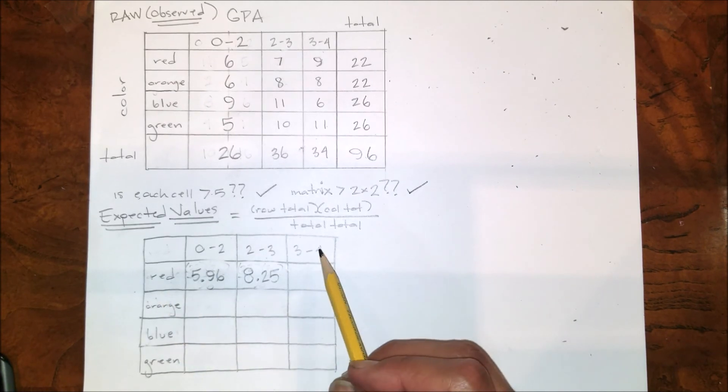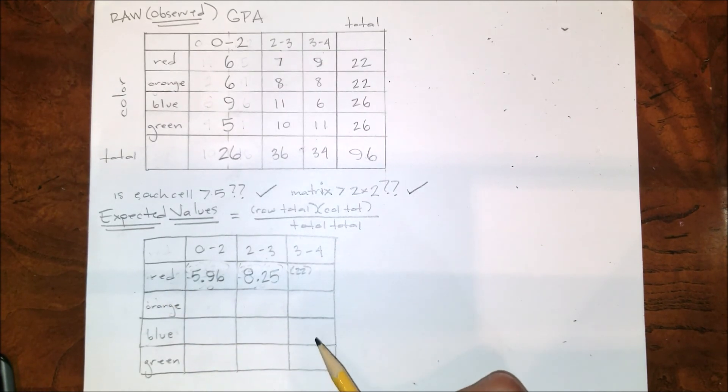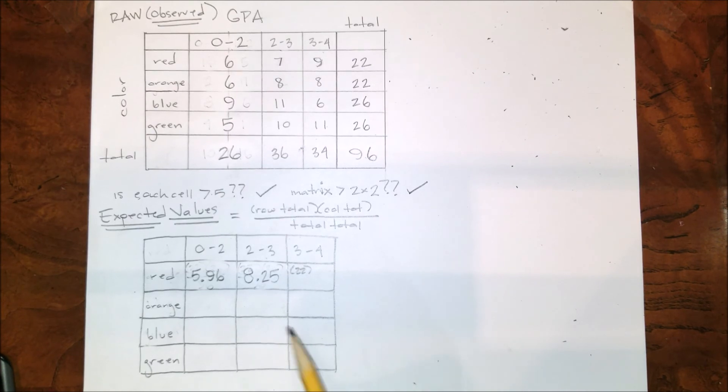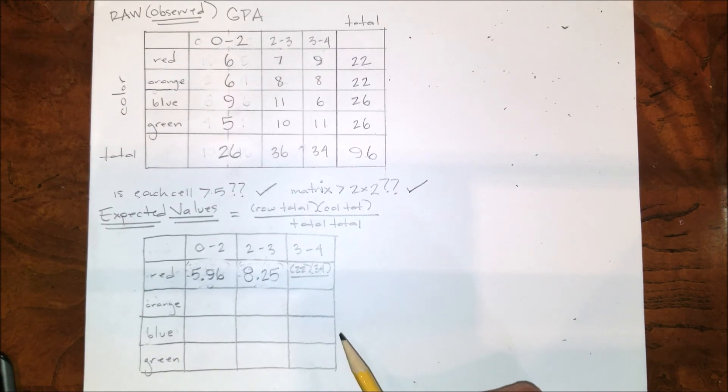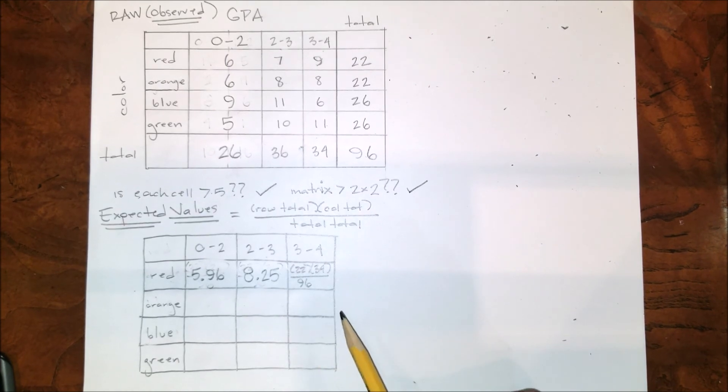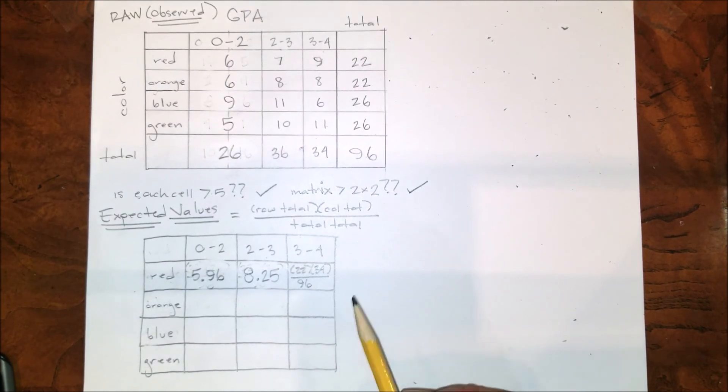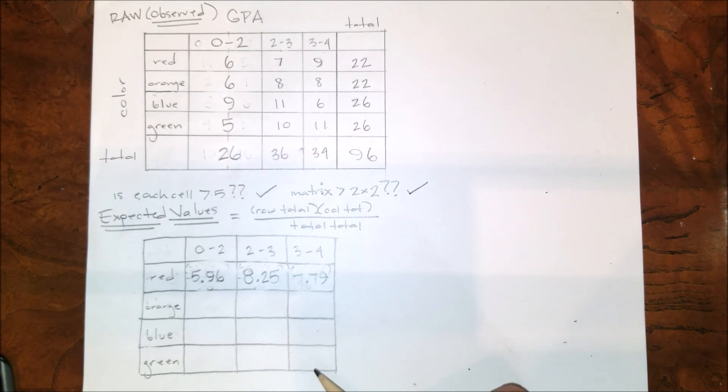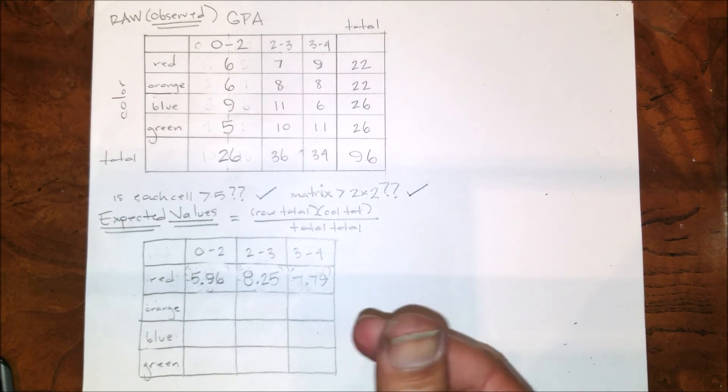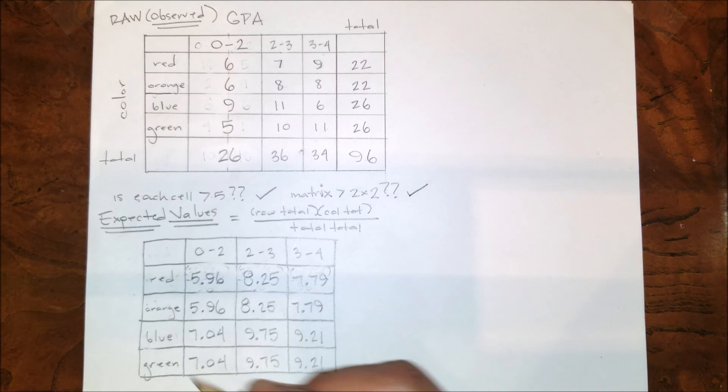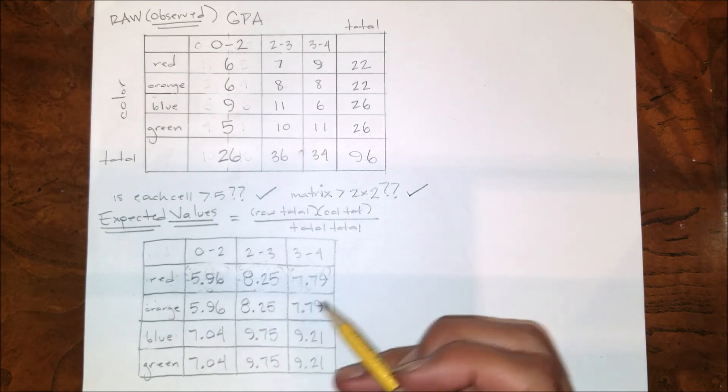Now I'm just going to go ahead and repeat that process for the rest of these, right down the line - expected values for each one of these cells. And there are all of my expected values.